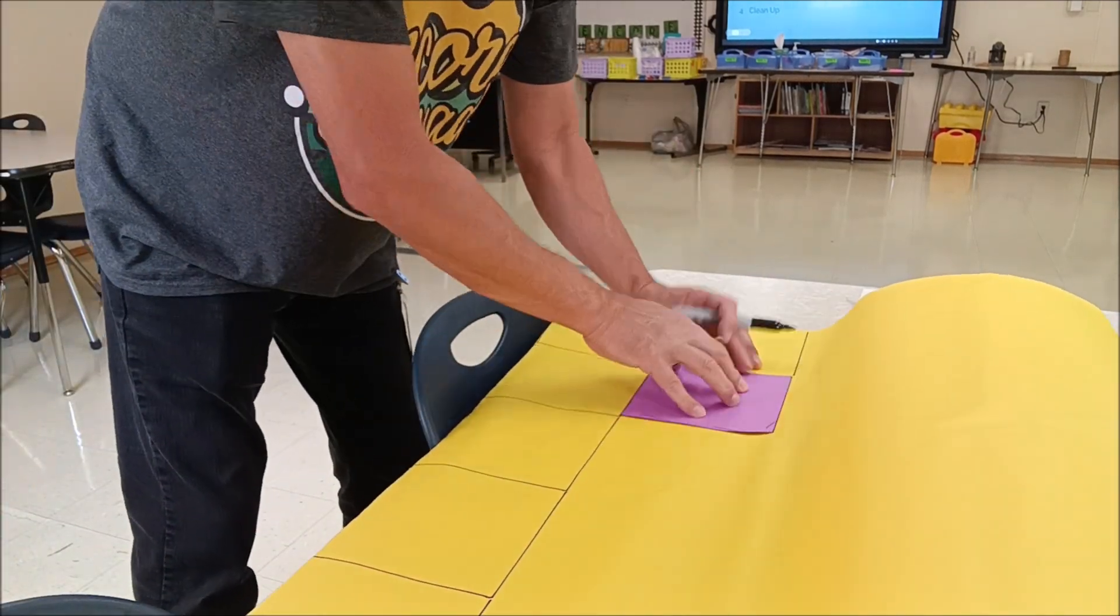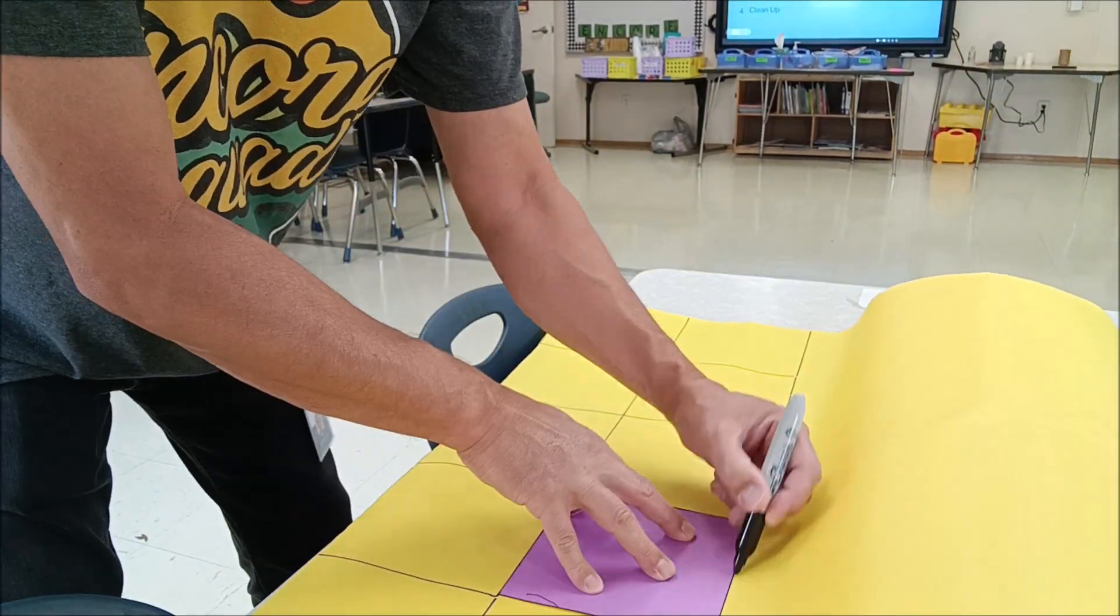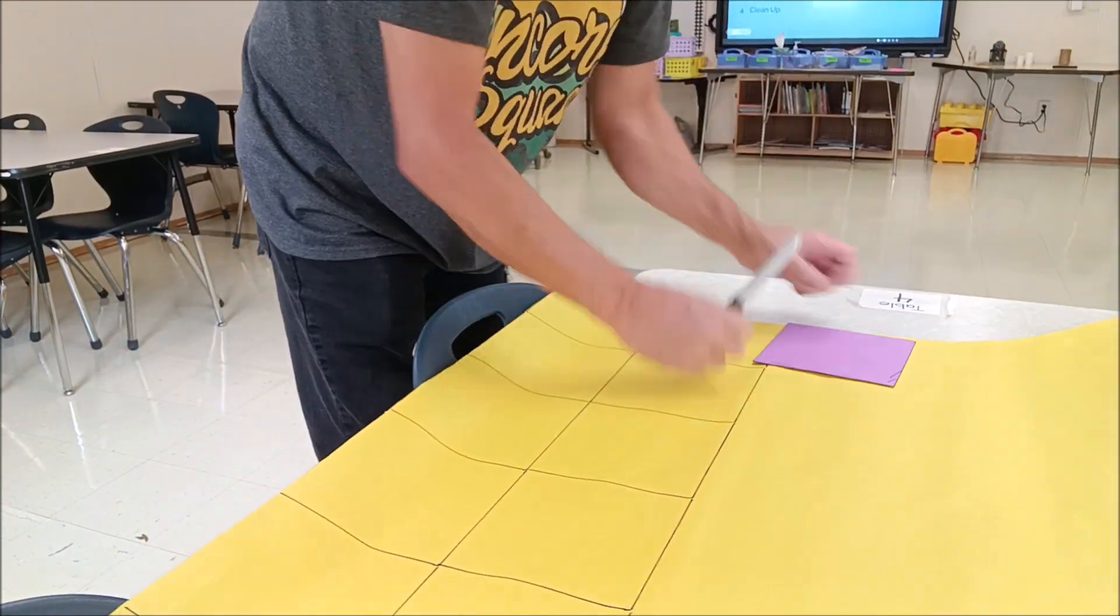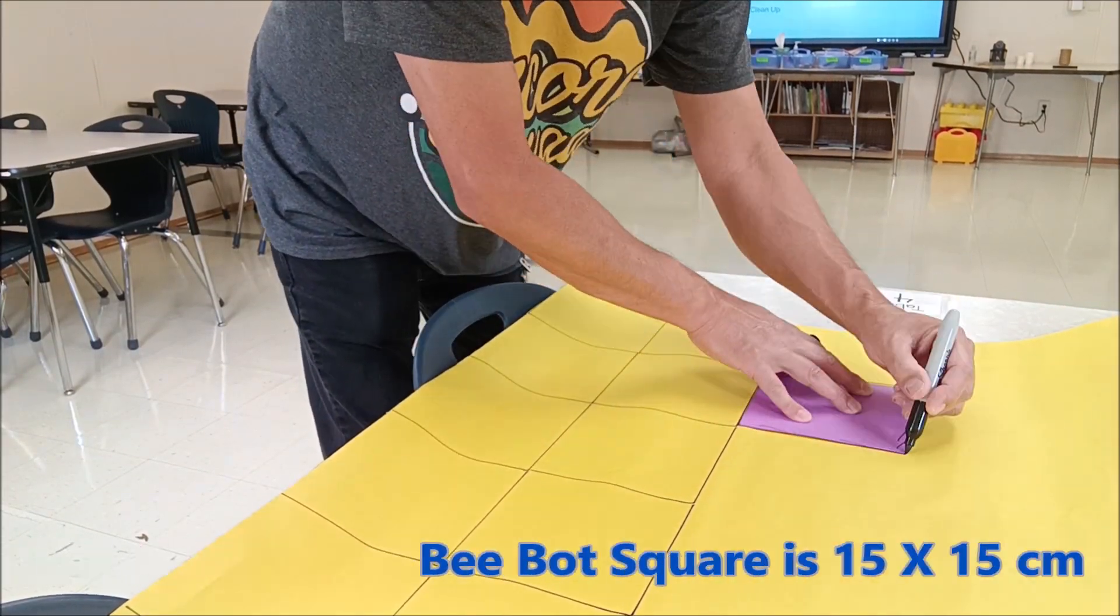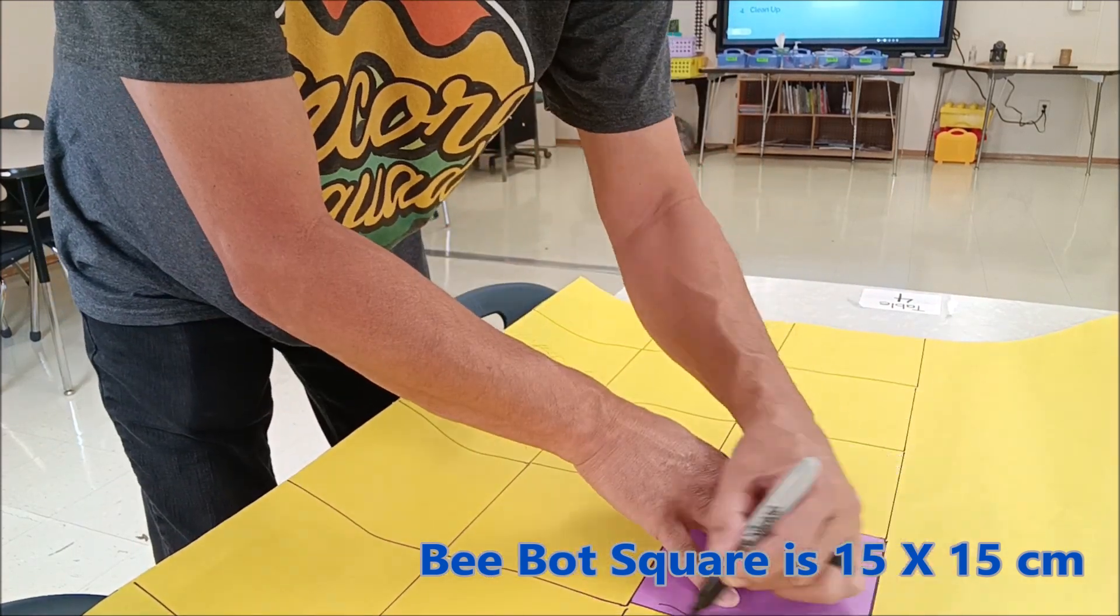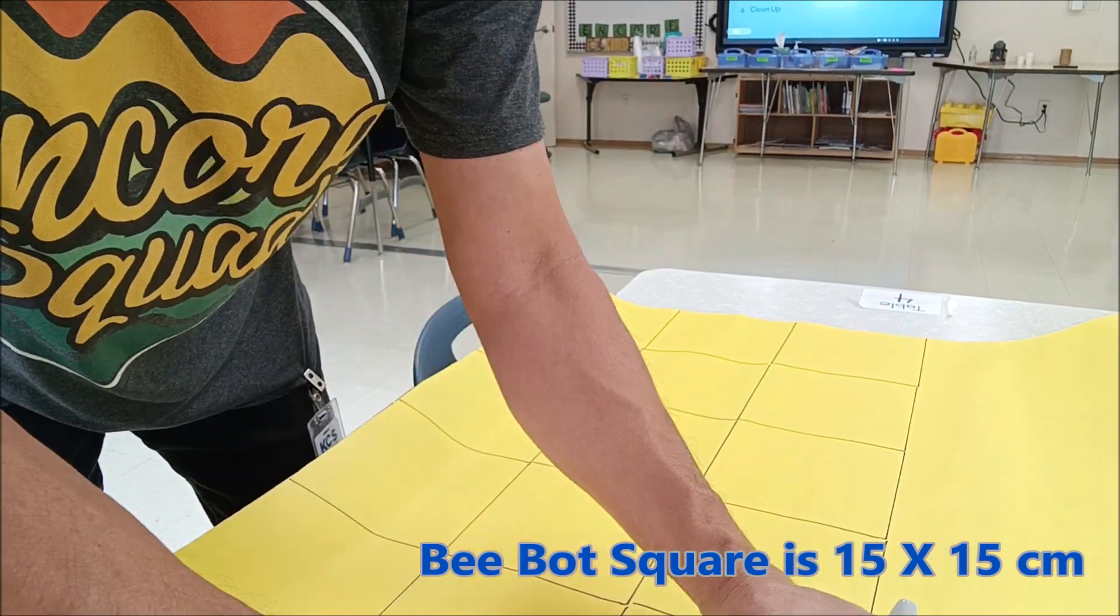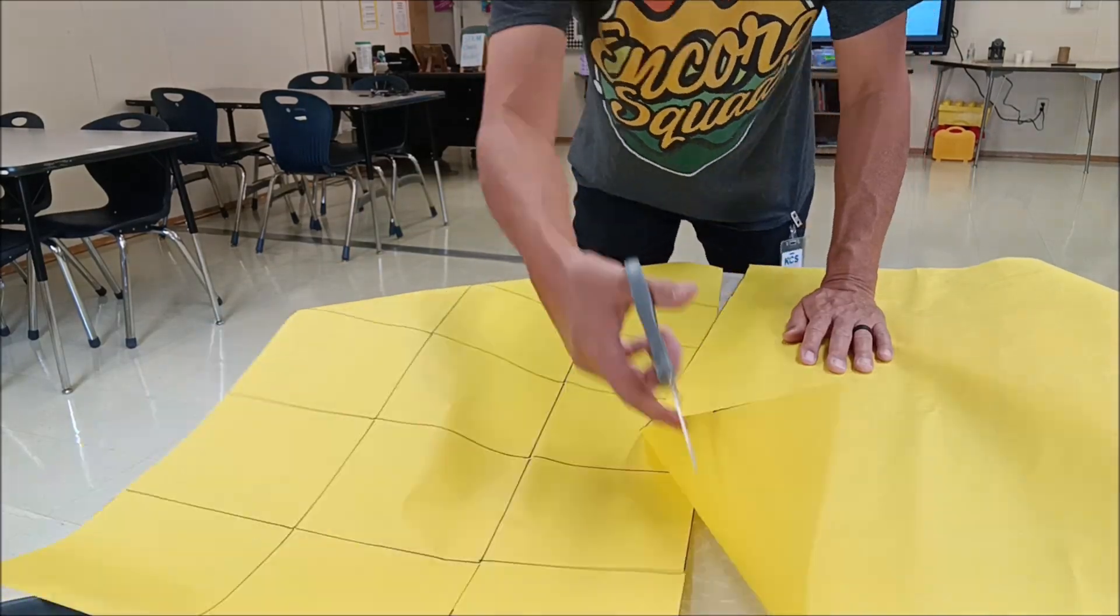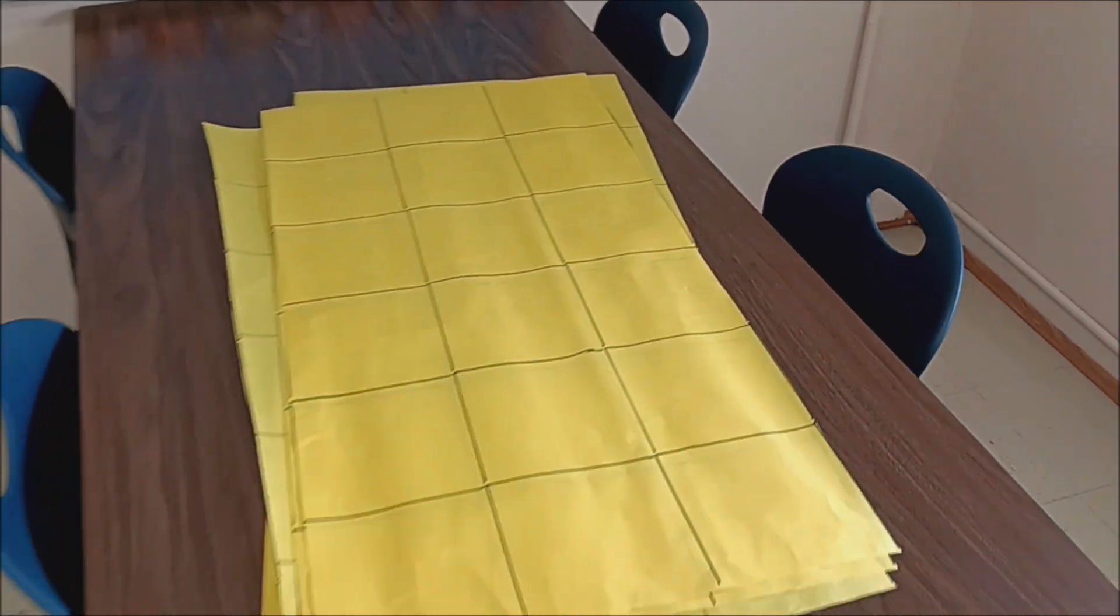Okay, so what I did was I took some regular butcher paper and if you're wondering, the BeBot square is 15 centimeters by 15 centimeters. So I basically cut myself out a template and made my own chart paper.